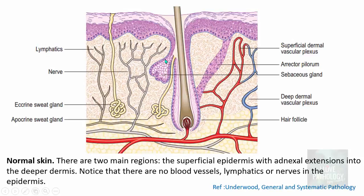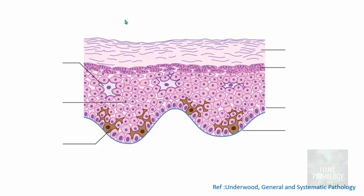I'm sure all of you are aware of the normal histology of skin. The skin contains the epidermis and the dermis. The epidermis has extensions into the dermis as adnexal structures. Importantly, the epidermis does not contain blood vessels, lymphatics, or nerves. Histologically, the epidermis is composed of five layers, separated from the dermis by a basement membrane. The lowermost part is the basal layer, composed of cuboidal cells that are the most mitotically active — essentially stem cells.